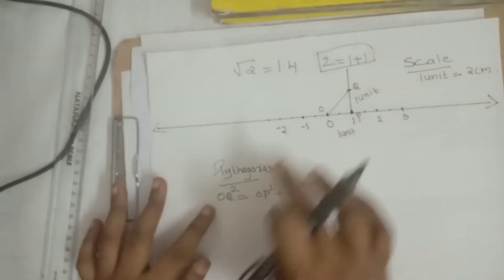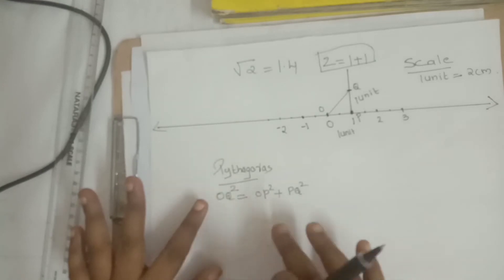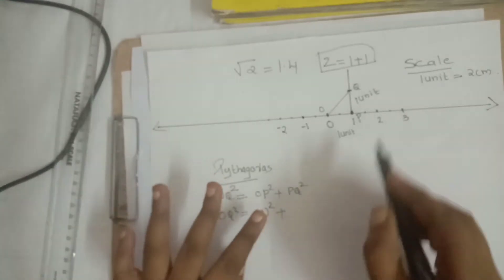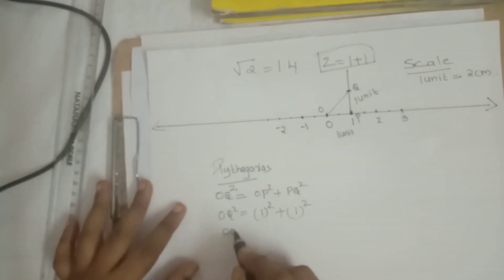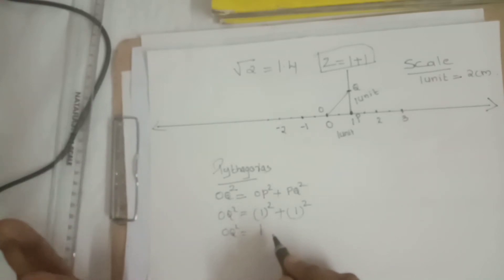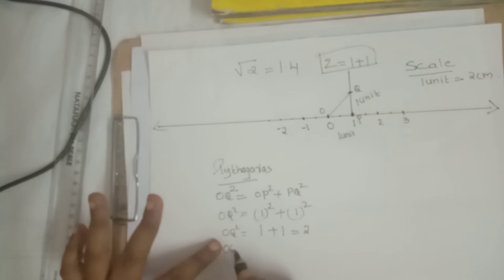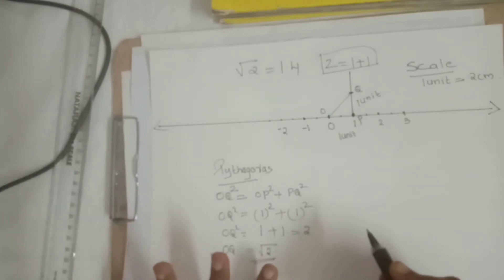Here, we want to substitute values. OQ value we don't know. Our aim is to verify that OQ represents √2. We know OP value is 1 unit. That's why OP is 1, but whole square is there, so 1². Then PQ represents 1 unit, whole square, so also 1². One squared means 1 times 1 equals 1. Here also 1 squared equals 1. So 1 plus 1 becomes 2. OQ² represents 2. Our side name is OQ, not OQ². So OQ equals √2 units. That means this OQ represents √2 units. We verified by Pythagoras.